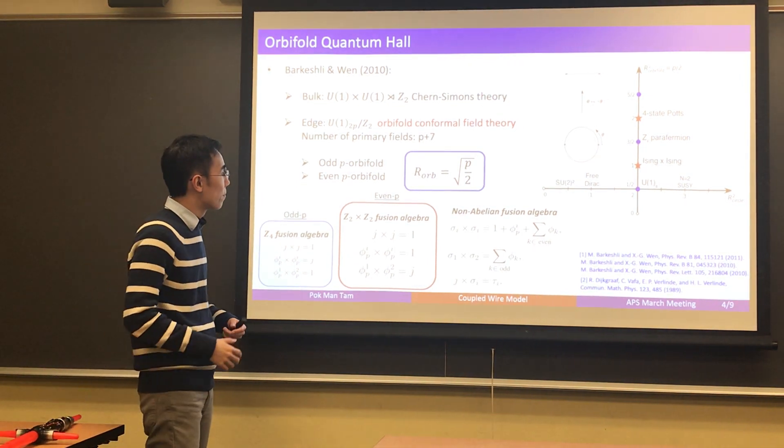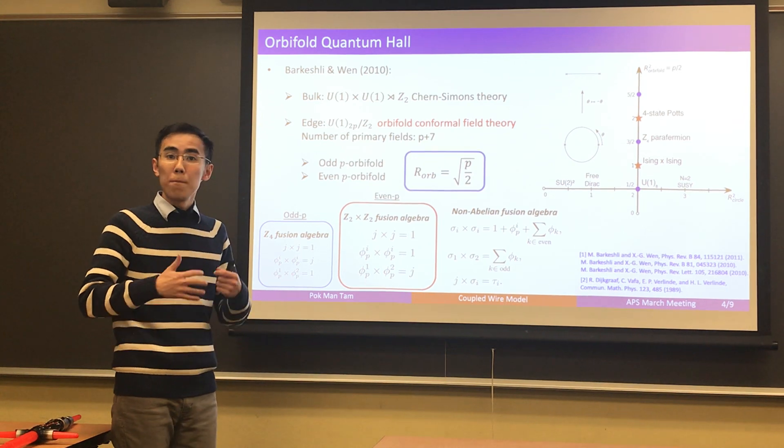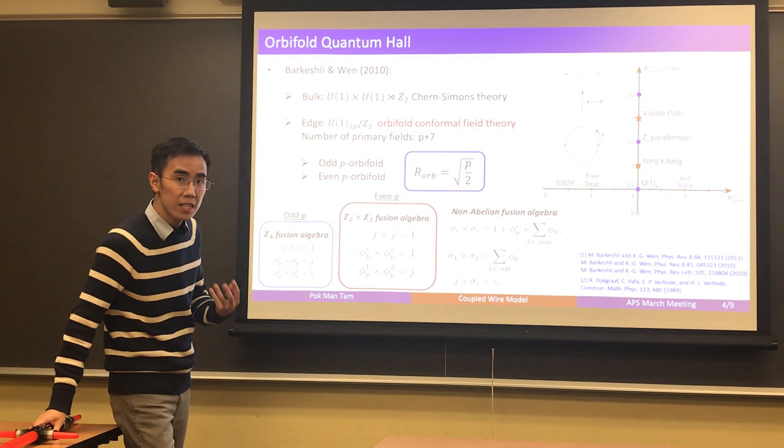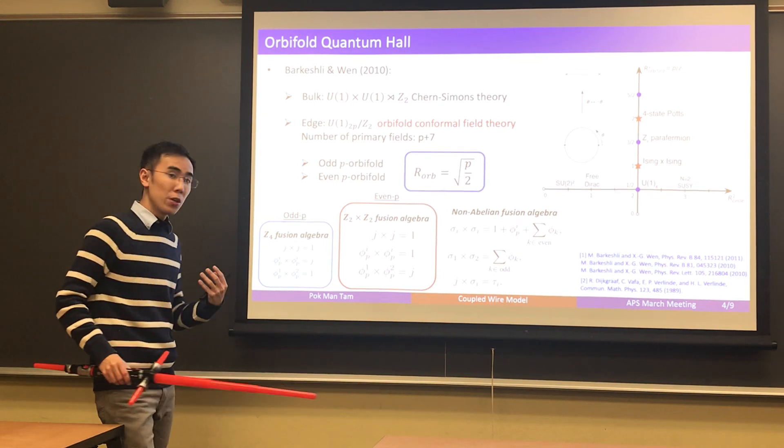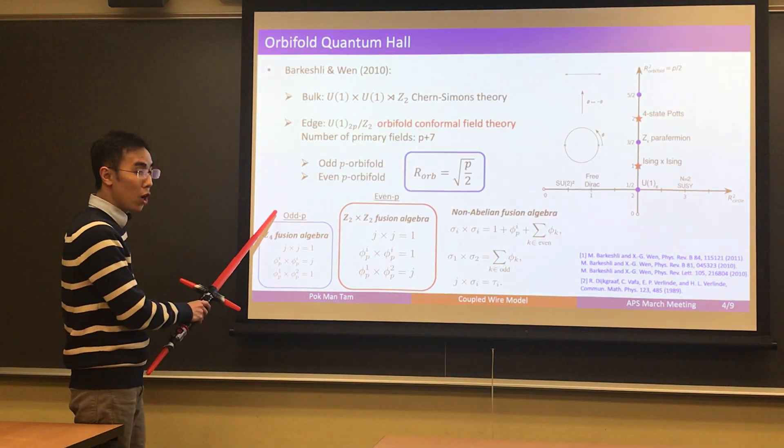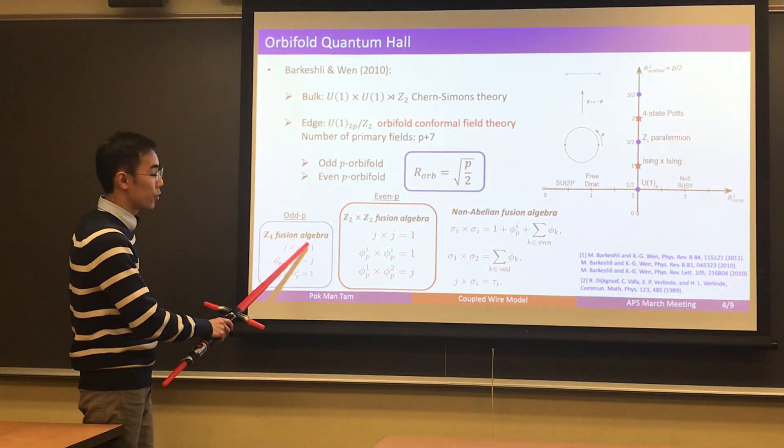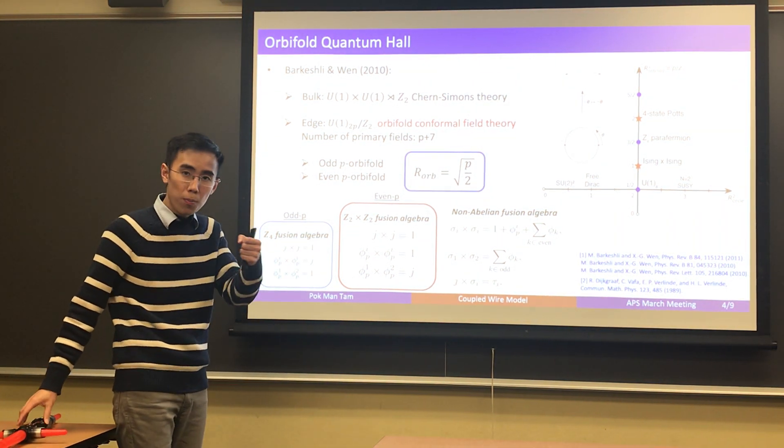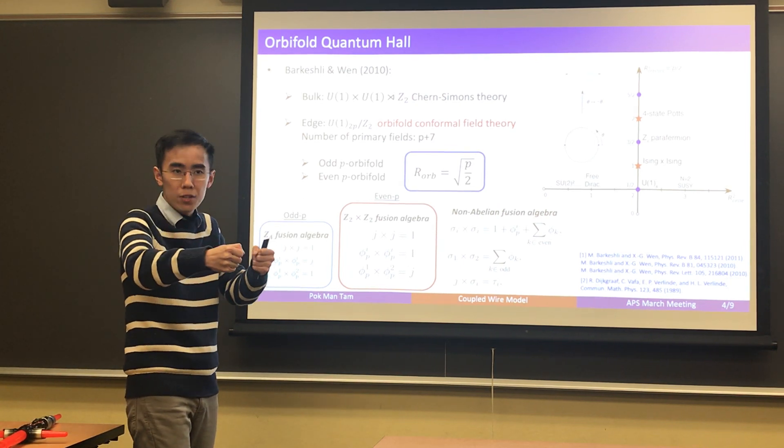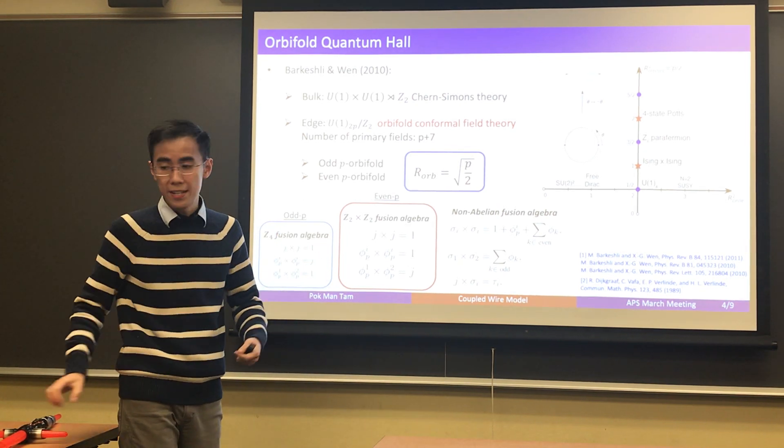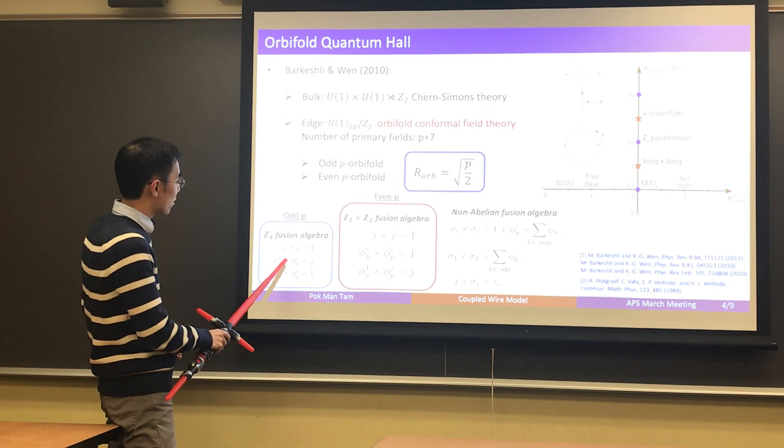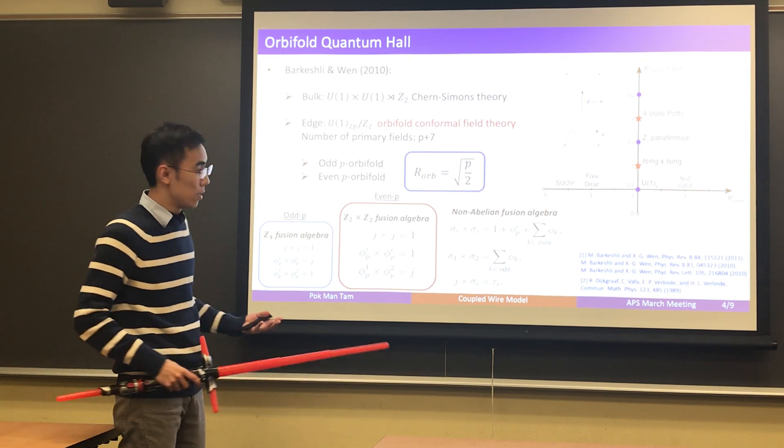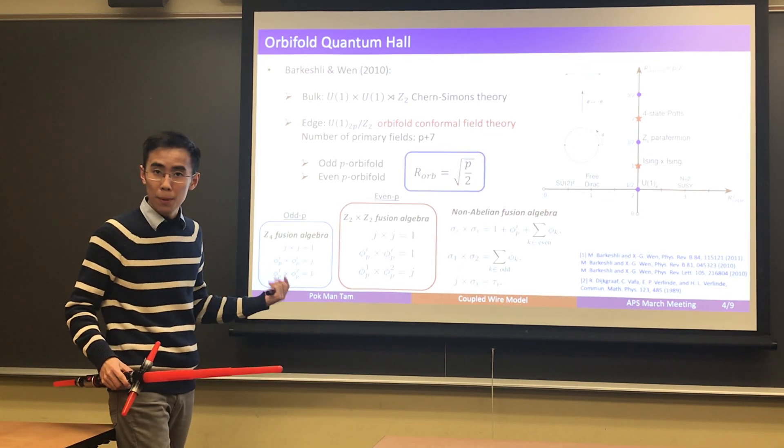The second point is that it's also very important to distinguish the case when p is even and when p is odd, because these two cases have drastically different fusion structures. For p being an odd integer, there's a Z4 fusion structure. So the corresponding fractional quantum Hall states would have a quasiparticle that would fuse with three of its copies in order to form the vacuum, to form the identity. That is the state that Charlie and Ardy studied earlier. They constructed a coupled wire model to build these states, and we're not going to talk about that today.